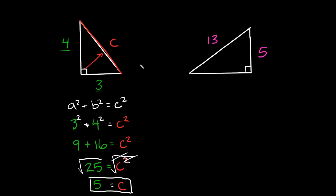Going back to our triangle, we now know C — we can replace that with the number five. The length of the hypotenuse is five. Now let's do one more example where the triangle is flipped a little bit. We have a right triangle with sides labeled five and 13, and we don't know this side down here. The hypotenuse is the side that isn't touching the right angle, so that must be the 13 side — it's also opposite the right angle.